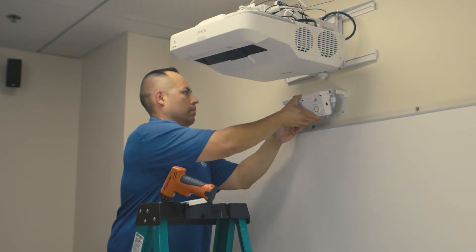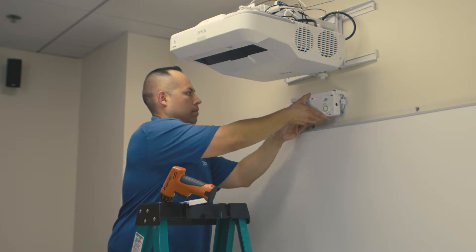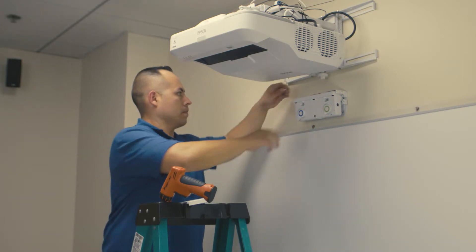To mount the finger touch unit, slide the tilt plate onto the bracket that is attached to the wall.